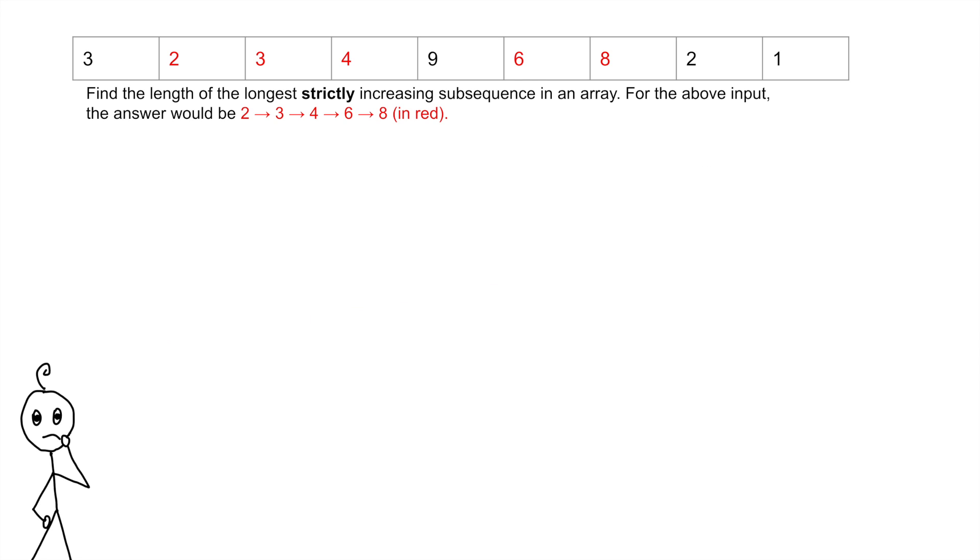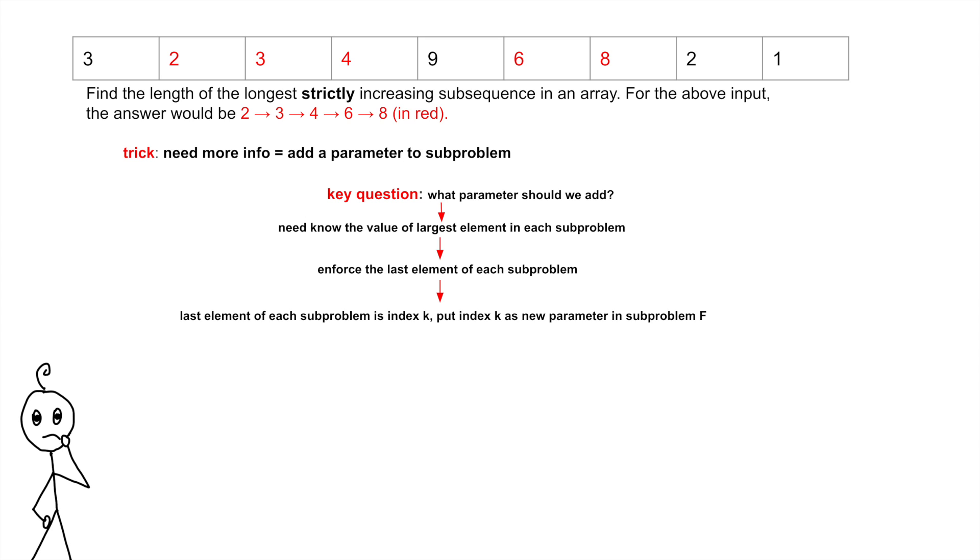We notice that we need to store more information. Whenever we need to store more information or different information, we should change our sub-problem's parameters. Here, what new parameter helps us? We need to know the value of the largest or rightmost element that is part of the longest sub-sequence in our previous sub-problems, and we can achieve this by enforcing that an element at index k must be the last element in each sub-problem. We add k as a new parameter to our sub-problem.